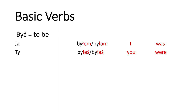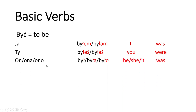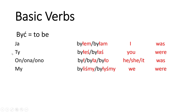For 'they' it's 'byli' for male and 'były' for female — I'm removing the '-ć' and adding '-li' or '-ły' for the female gender. For 'you' it's 'byłeś' for male, 'byłaś' for female. He was — 'był', she was — 'była', and for neutral — 'było'. This is for singular forms.